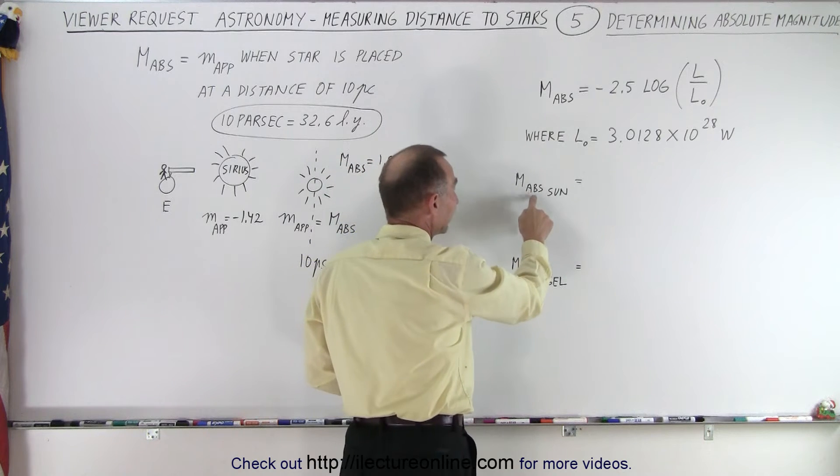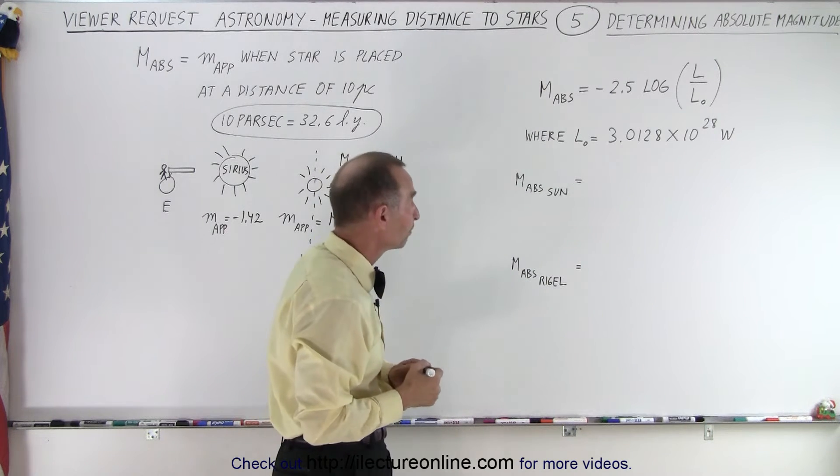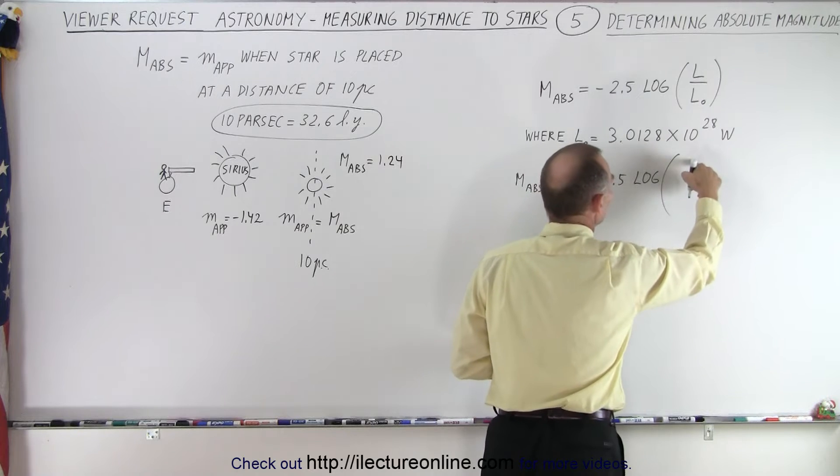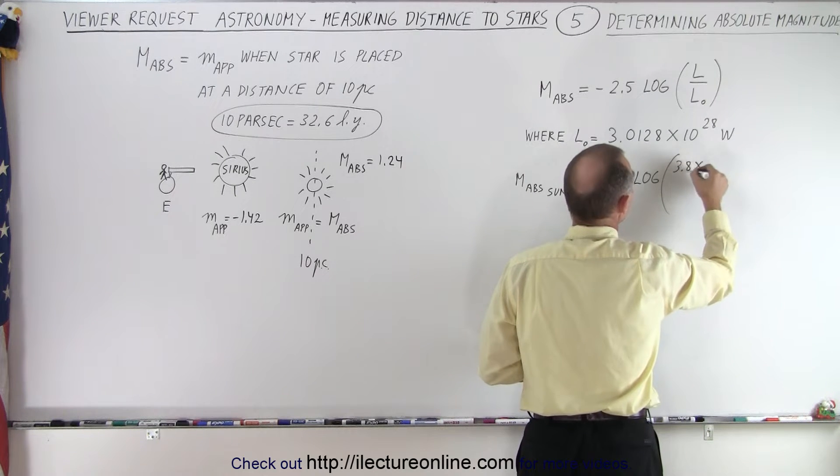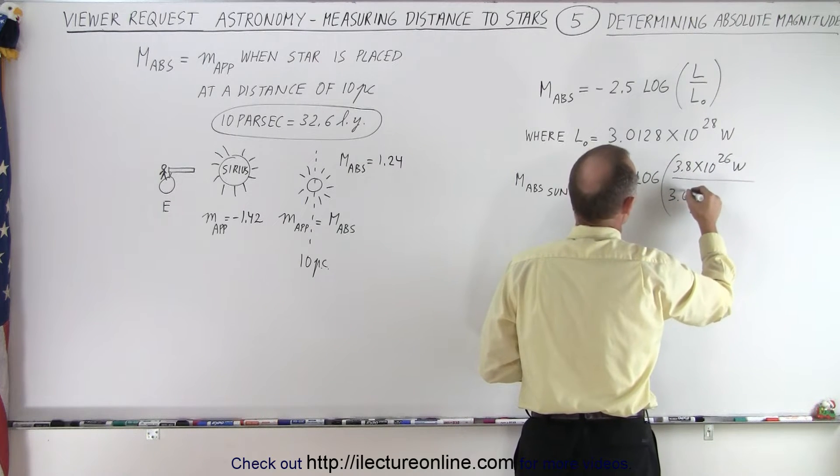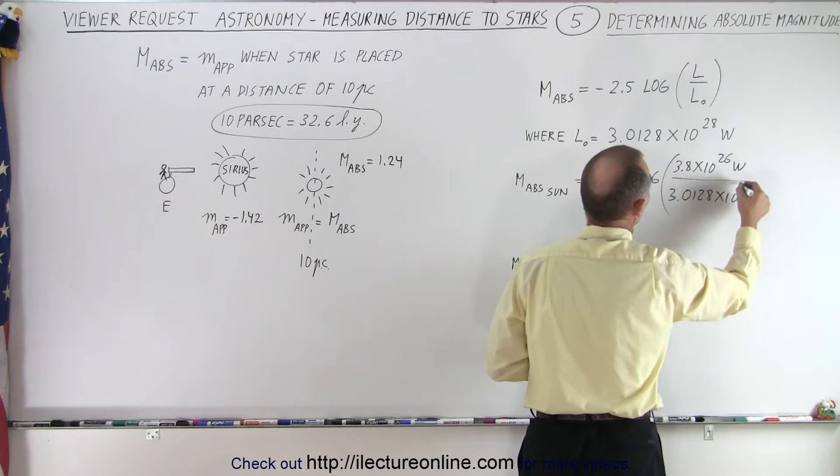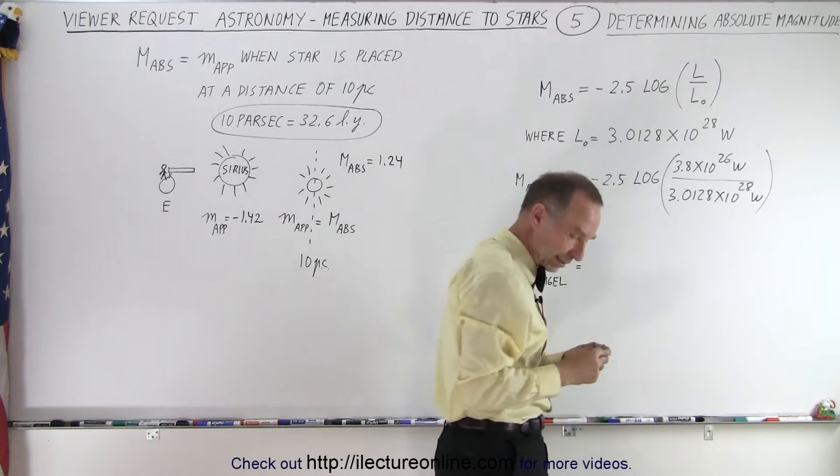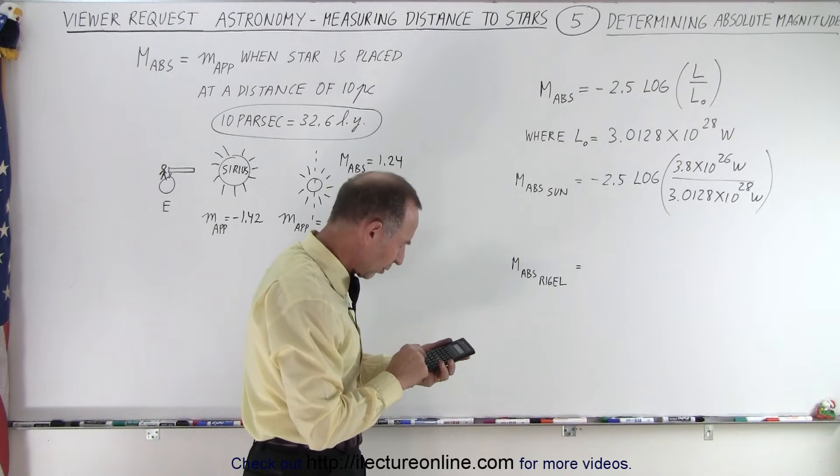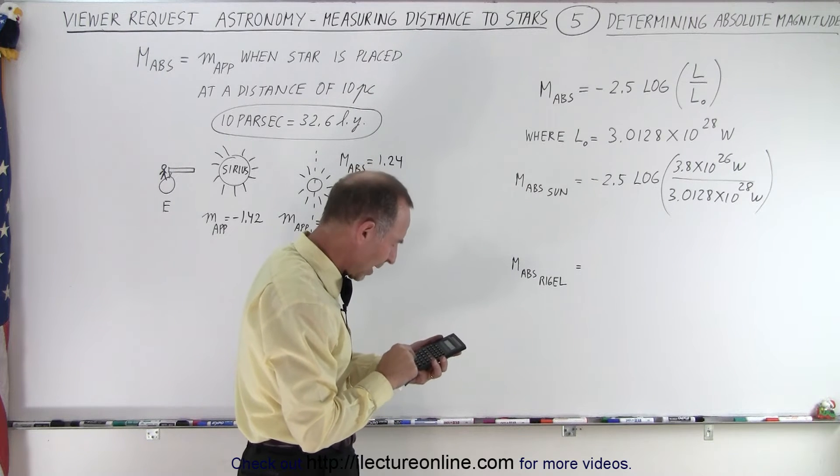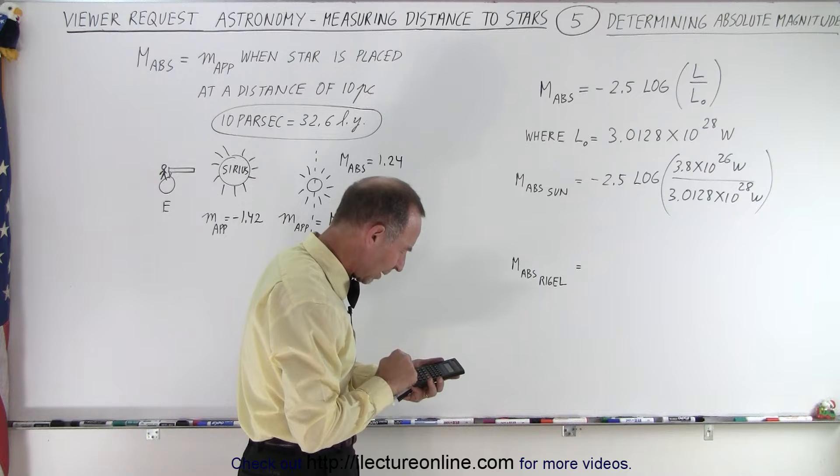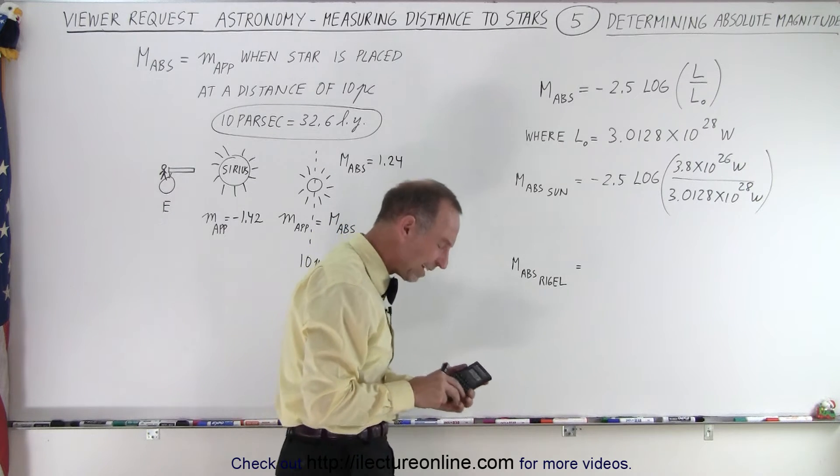All right, let's now measure or calculate the absolute magnitude of the sun. Well, the equation says it's minus 2.5 times the log of the luminosity of the star. For the sun, it's 3.8 times 10 to the 26 watts. And we divide that by the base luminosity of 3.0128 times 10 to the 28 watts. And with a calculator, we can figure that out. And this is indeed log base 10, not log base e. So 3.8 e to the 26 divided by 3.0128 e to the 28.